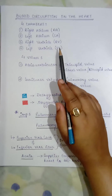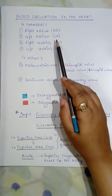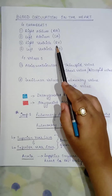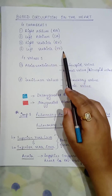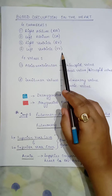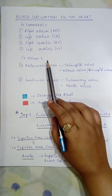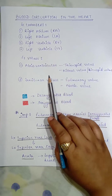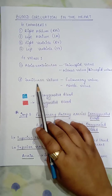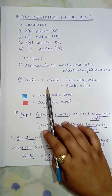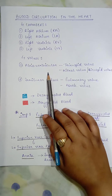There are four chambers in the heart: the right atrium, the left atrium, the right ventricle, and the left ventricle. The heart also has valves, mainly divided into two types: the atrioventricular valves and the semilunar valves.